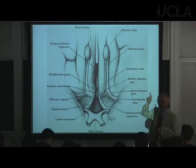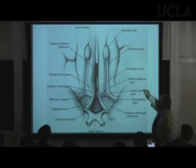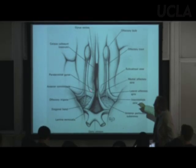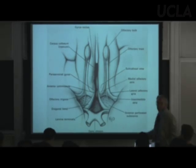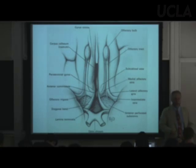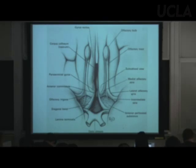Early next week we'll also see a connection that goes from one olfactory bulb to the other — the anterior commissure. Commissures are sets of axons that go across the midline. The biggest commissure in the brain is the corpus callosum. See you in lab.